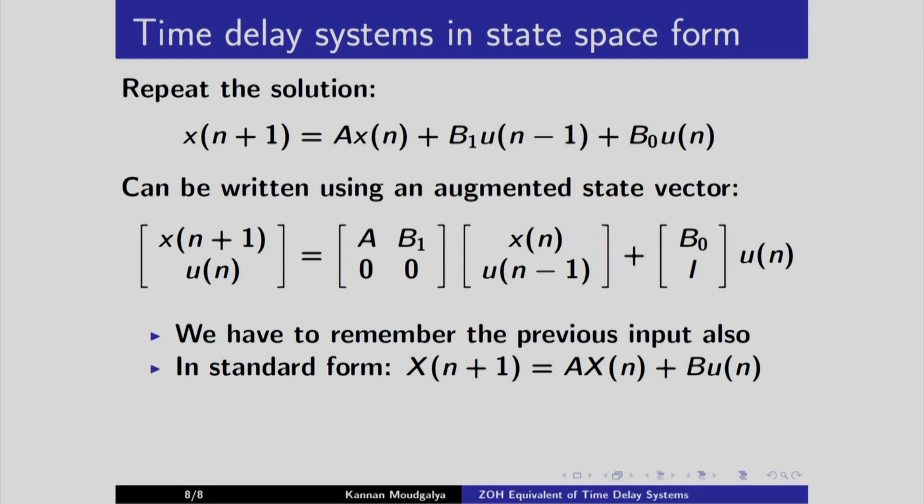So we have to remember the previous input also. So this is also in standard form except that now the x matrix is, x is an augmented vector. In this case it has this original state, original state and the input u of n taken in the previous time instant. So I call it capital X of n plus 1 equals this whole thing becomes nu a and then nu state and this becomes nu b times u n.